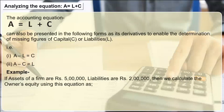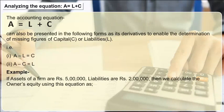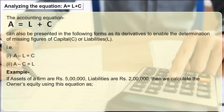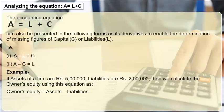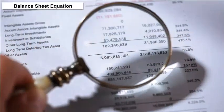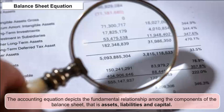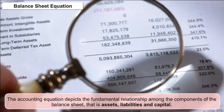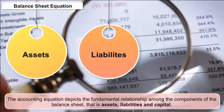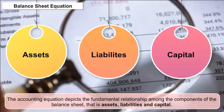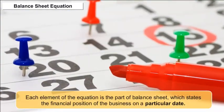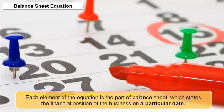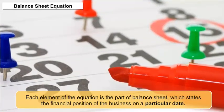Example: If assets of a firm are ₹5 lakh and liabilities are ₹2 lakh, then owner's equity = Assets − Liabilities = ₹5 lakh − ₹2 lakh = ₹3 lakh. The accounting equation depicts the fundamental relationship among the components of the balance sheet — assets, liabilities, and capital — and is therefore also called the balance sheet equation. Each element of the equation is part of the balance sheet, which states the financial position of the business on a particular date.